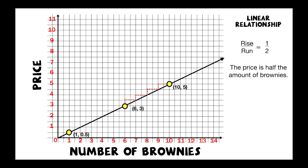This slope value is also great to show how the price is half the amount of brownies. Think about it: if I had six brownies, the price was three; if I had 10 brownies, the price was five. The slope is showing that relationship — it's half the price of brownies. Since it goes through the origin (0, 0), I can use this to form an equation for the line. My x is the independent variable — the number of brownies — and my price is y. So if the price is half the number of brownies, that's the equation y = (1/2)x. Linear relationships — it's really cool.